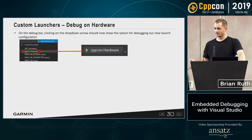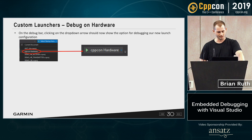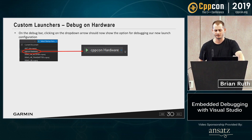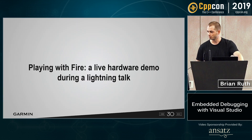Once you get that done, you may have to refresh a few times. Go to your play button, hit the dropdown, and you'll see the new configuration we added along with some other items it finds — though I hear they're working on filtering that out. Go ahead and hit play on "CppCon hardware", and now we play with fire.